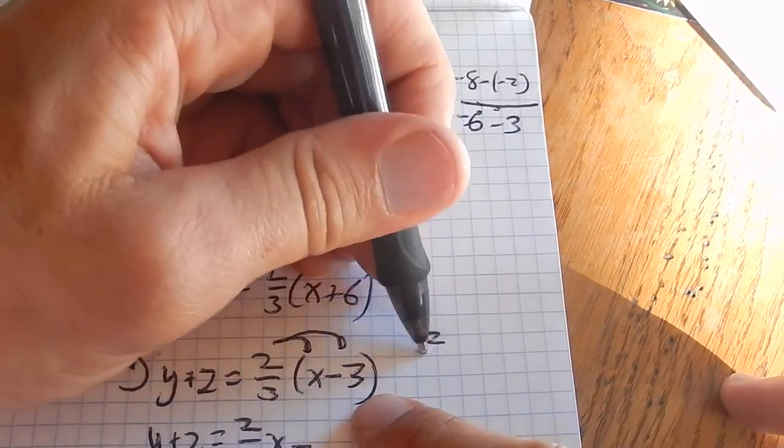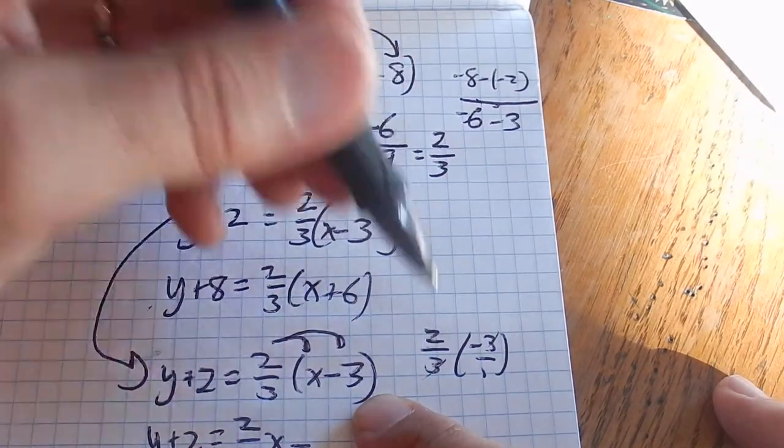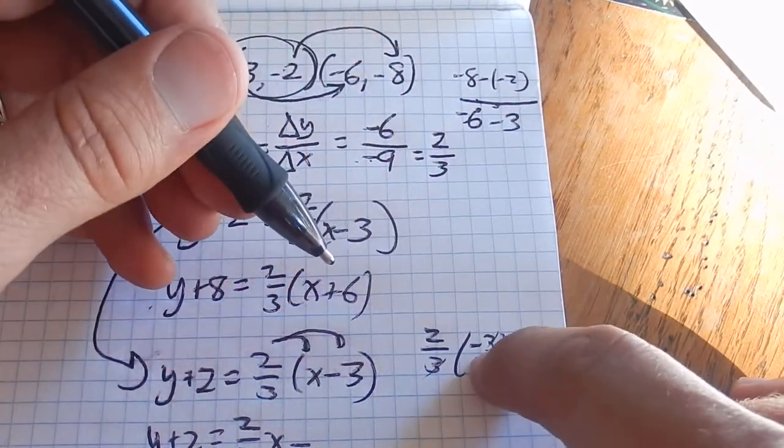Think about that fraction. 2 thirds times negative 3. Negative 3 divided by 3 is 1, so that's negative 2.